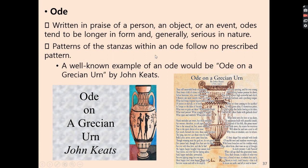Next is Ode. An ode is written in praise of a person, an object, or an event. Odes tend to be longer in form and generally serious in nature. Patterns of the stanzas within an ode follow no prescribed pattern. A well-known example is 'Ode on a Grecian Urn' by John Keats. You can write an ode to your cell phone, or an ode for your mother, or an ode for your brother's pet.